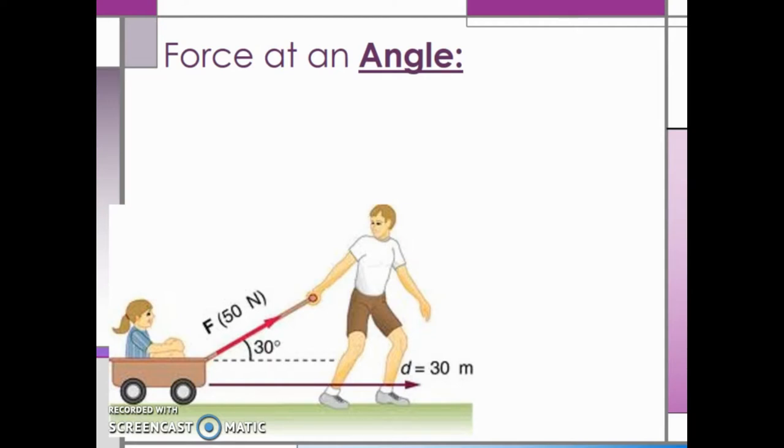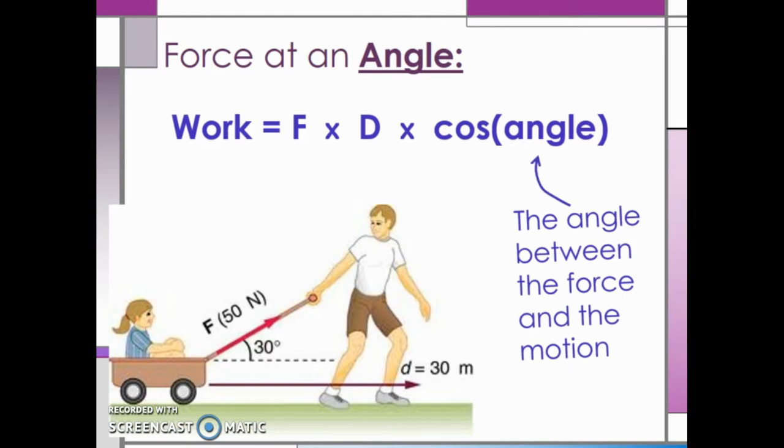If the force is being applied at an angle, then work is equal to the force multiplied by the distance multiplied by the cosine of the angle. The angle that we are looking at is the angle between the force and the motion.